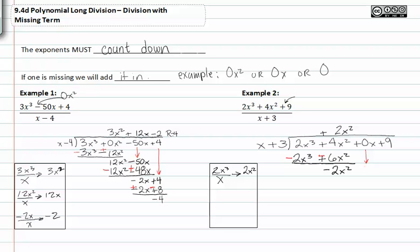Take that first term in our dividend, divide it by the first term of our divisor to get negative two x. Put that in our quotient, multiply to our divisor to get negative two x squared minus six x. Change the signs and add to get six x.